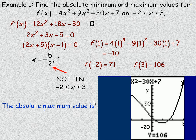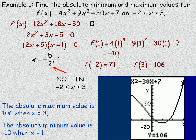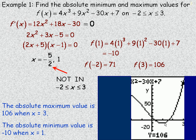So the absolute maximum value is 106 and occurs where x is 3. The absolute minimum value is negative 10 and occurs where x is 1.